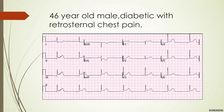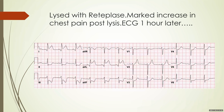With an RVMI, you can localize it to the proximal RCA — so it's an inferior wall MI with RVMI due to proximal RCA occlusion. This patient was lysed with reteplase, probably because the hospital did not have a cath lab, and the patient complained of a marked increase in chest pain post-lysis. This is the ECG taken one hour later.